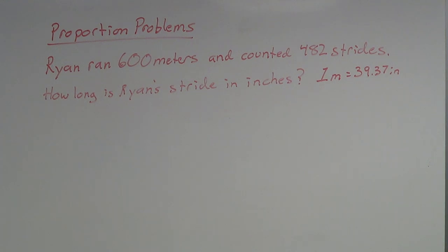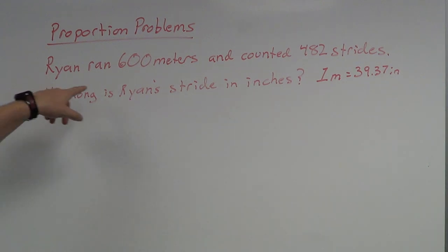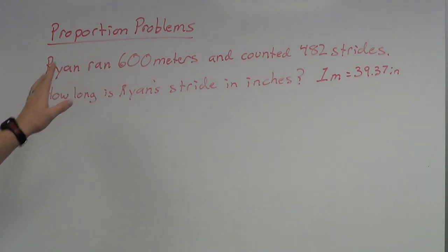Ryan ran 600 meters and counted 482 strides. How long is Ryan's stride in inches? At the end it tells us that 1 meter is 39.37 inches. So what we have to do is not only find how long Ryan's stride is, but find it in inches. Since Ryan ran 600 meters, we've got to convert everything from meters to inches — there are a lot of steps to do for this problem.